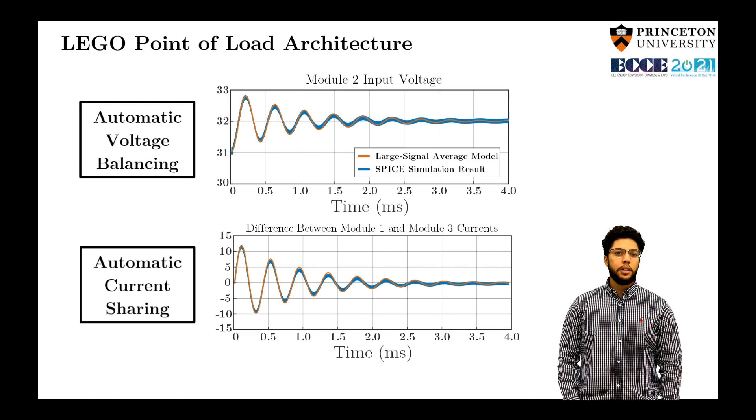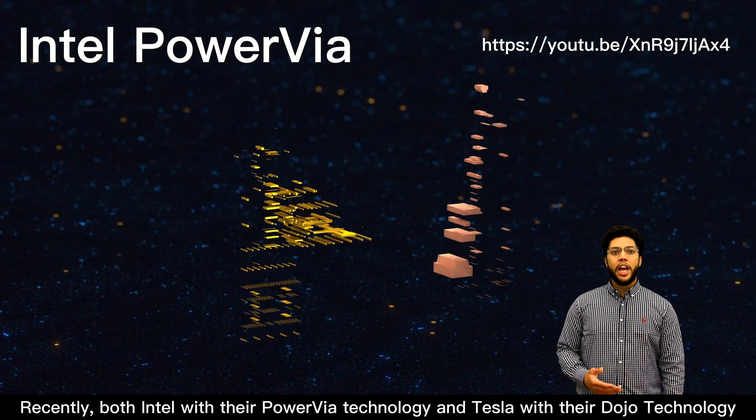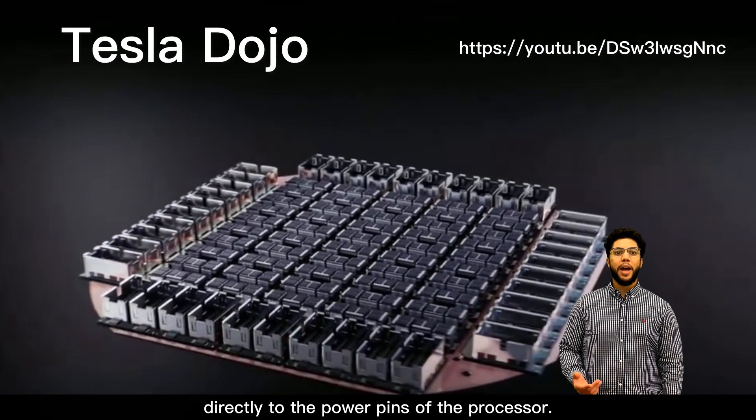Recently, both Intel with their Power Via technology and Tesla with their Dojo technology have adopted vertical power delivery, where power is delivered from the voltage regulator directly to the power pins of the processor.